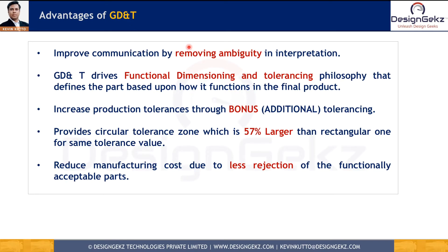GD&T offers a lot of advantages. First, it removes ambiguity by providing datums. It also gives us functional dimensioning and tolerancing, meaning we can define each feature directly from the datums as per the function of the part. By providing M and L modifiers, we can get additional tolerance. Using a cylindrical tolerance zone gives us almost 57% larger tolerance zone compared to rectangular and square zones — meaning more parts will be acceptable, less rejection, and the cost of rework and rejection will come down drastically.